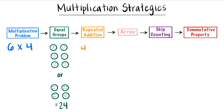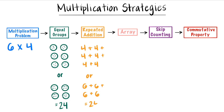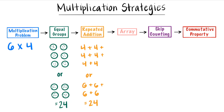Next we can use repeated addition by adding four plus four plus four plus four plus four plus four six times and we would get 24. Or we can do six plus six plus six plus six and we would also get 24.